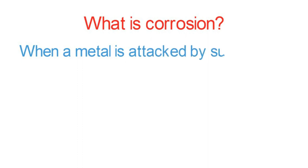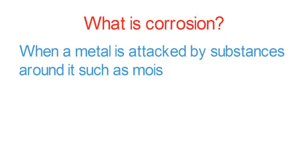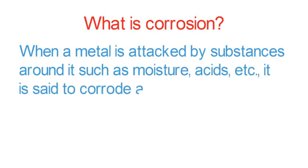What is corrosion? When a metal is attacked by substances around it such as moisture, acids, etc., it is said to corrode and this process is called corrosion.